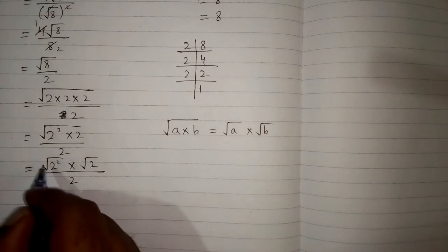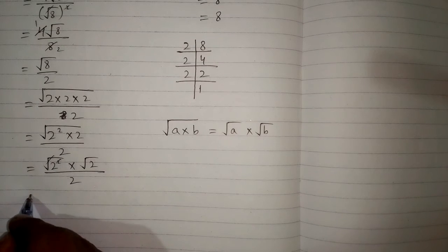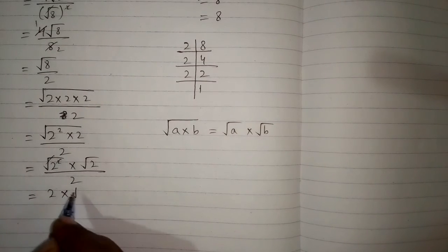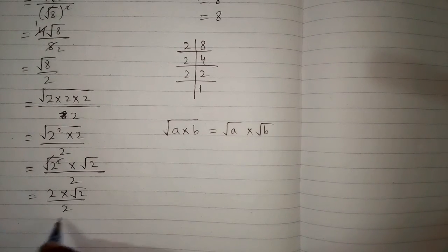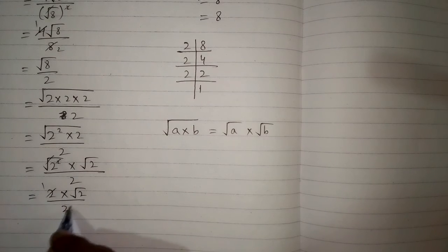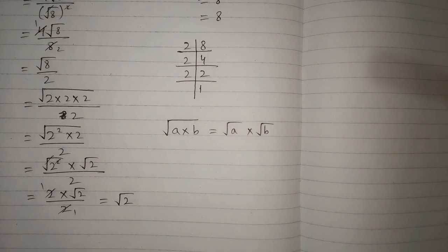We can cancel the square root of 2² — the square root and the square cancel — giving us 2 × square root of 2 upon 2. The 2 in the numerator and the 2 in the denominator cancel, so the final answer is square root of 2.